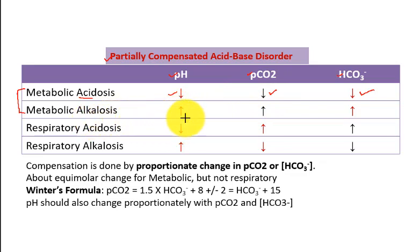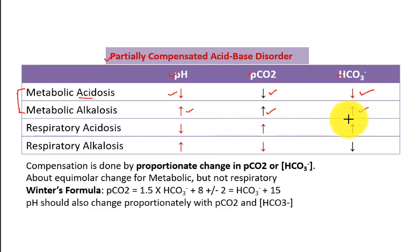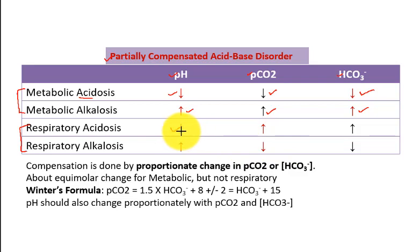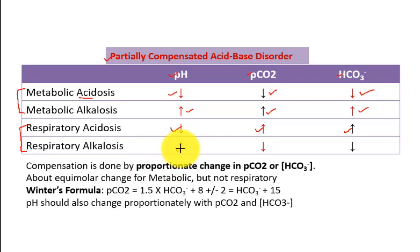In metabolic alkalosis, because it is alkalosis, this pH will be high because of high bicarbonate. And then carbon dioxide will also follow this increase in bicarbonate concentration. In respiratory acidosis, the pH will become low because of carbon dioxide retention. When carbon dioxide is high, bicarbonate will also follow. In respiratory alkalosis, high pH is because of low carbon dioxide or flushing out of carbon dioxide, and this bicarbonate follows.